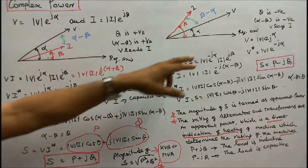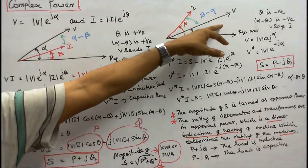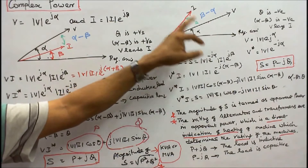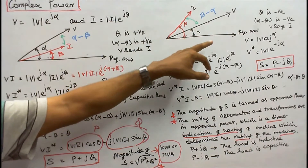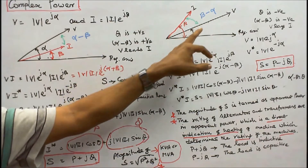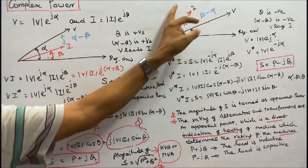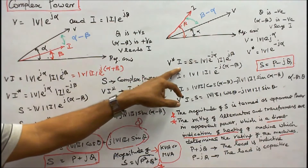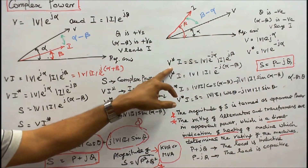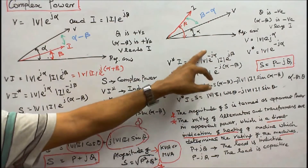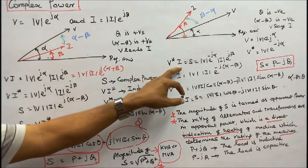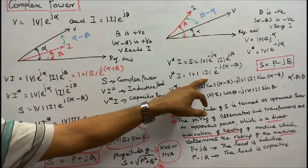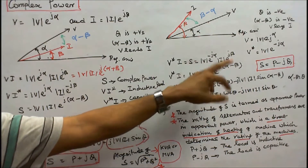For the second case, consider the phasor diagram where the angle between the reference axis and the current is beta, and the angle between the reference axis and voltage is alpha. Therefore, the angle between voltage and current is beta minus alpha. We can write V conjugate times I. V conjugate equals modulus of V times e to the power minus j-alpha. I equals modulus of I times e to the power j-beta. That equals modulus of V times modulus of I times e to the power j(beta minus alpha), which is e to the power minus j(alpha minus beta).